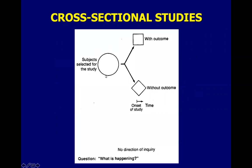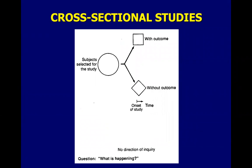In a cross-sectional study, subjects are selected and we look at the outcome at that same point. The answer to the study question and the time it is done are the same — there is no direction of inquiry. Our question here is 'What is happening?' One advantage is that it is relatively easy to do and can include a large number of subjects. A disadvantage is that it doesn't tell you the causal relationship — it doesn't tell you whether MRSA caused the ICU admission or the ICU admission came first, because you are looking at them at the same time.